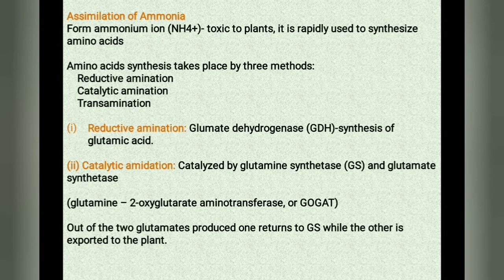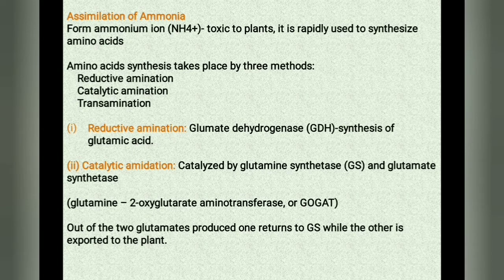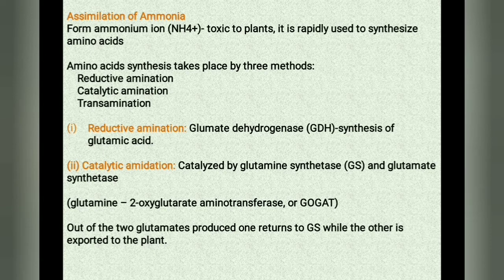In reductive amination, glutamate dehydrogenase (GDH) catalyzes the synthesis of glutamic acid. In catalytic amination, a two-step process is catalyzed by glutamine synthetase (GS) and glutamate synthetase, which is glutamine 2-oxoglutarate aminotransferase (GOGAT). Out of two glutamates produced, one is returned to GS while the other is exported to the plant.